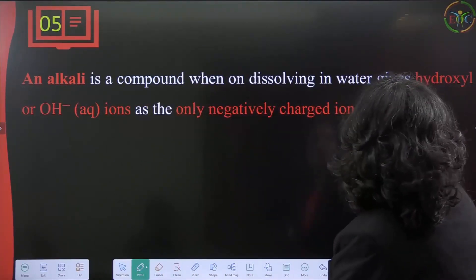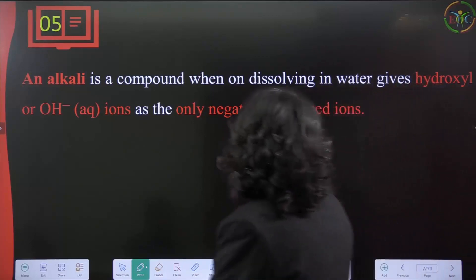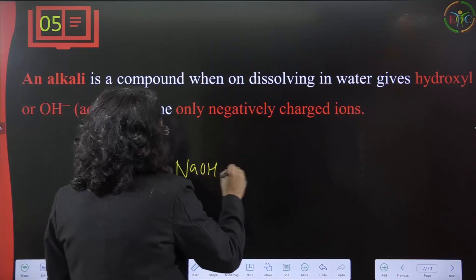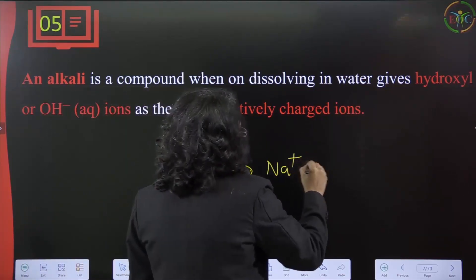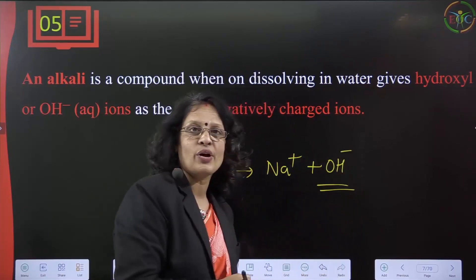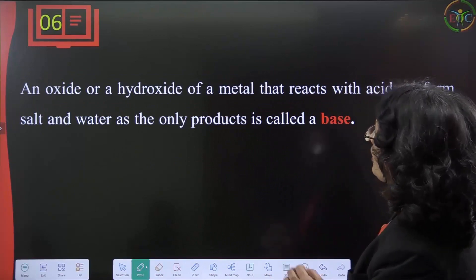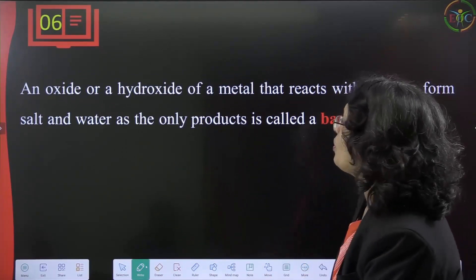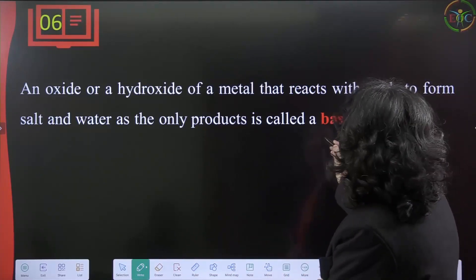An alkali is a compound that, when dissolved in water, releases hydroxyl ions as the only negatively charged ions. For example, sodium hydroxide breaks into Na⁺ and OH⁻. A base is an oxide or hydroxide of a metal that reacts with acid to form salt and water as the only products.